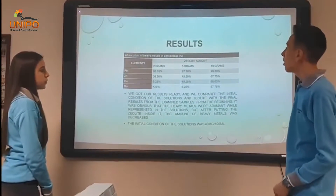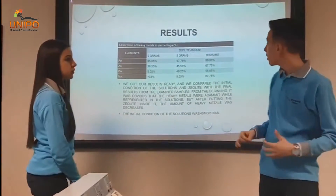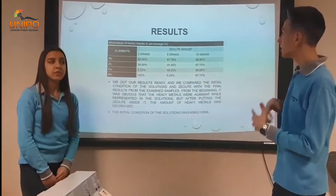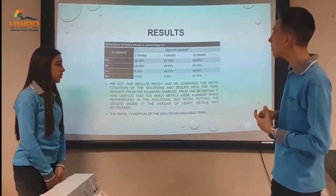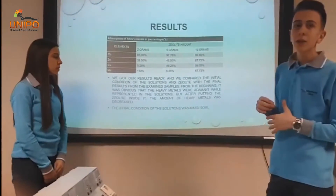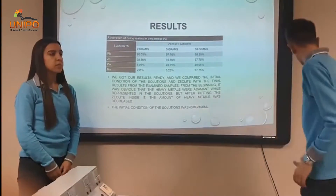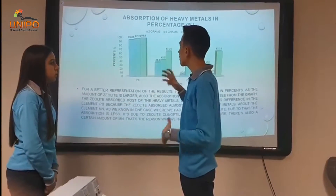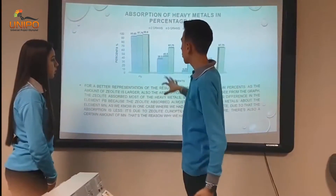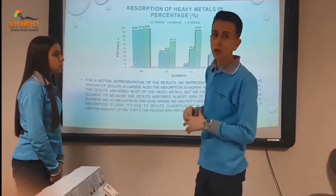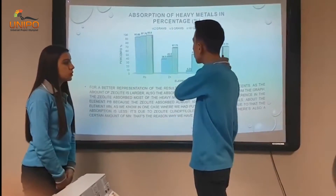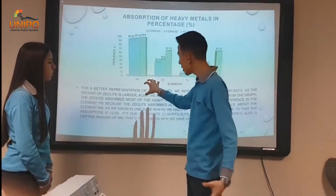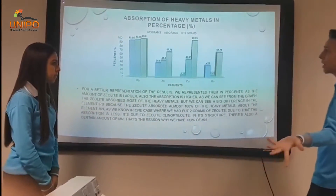When we got our results ready, we compared the initial condition of the solution — before zeolite treatment — with the final results. For a better view, we represented them as percentages so we can clearly see how many percent of the heavy metals are absorbed. I represented them graphically: we can see that the most particles are absorbed with the highest amount of zeolite, because as the amount of zeolite is higher, the absorption is higher. With 10 grams of zeolite we can absorb almost 70 to 80 percent, and in total we can absorb about 98 to 99 percent.